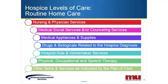Some covered services under the routine home care rate include nursing services, medical social service, physician services, counseling services, medical appliances and supplies such as walkers, hospital beds, wound care supplies, etc. Also, hospice home aide or homemaker services, or PT, OT, or speech language pathology services. Other services such as music therapy would all be covered under the routine home care rate. Qualified personnel must perform all services, but it is the nature of the service, rather than the qualification of the person who provides it, that determines the coverage category.